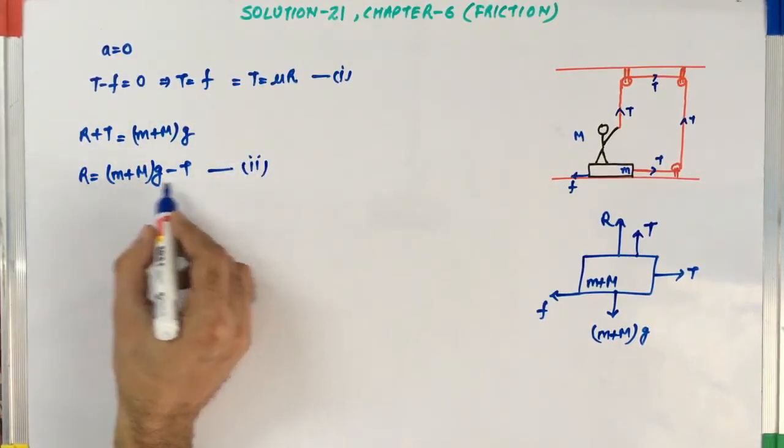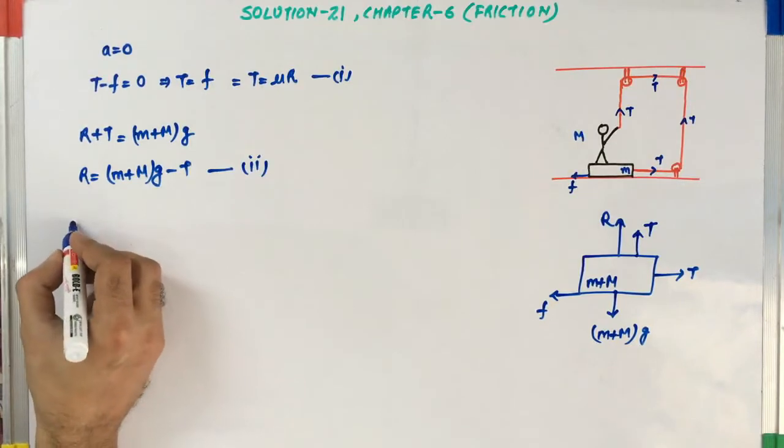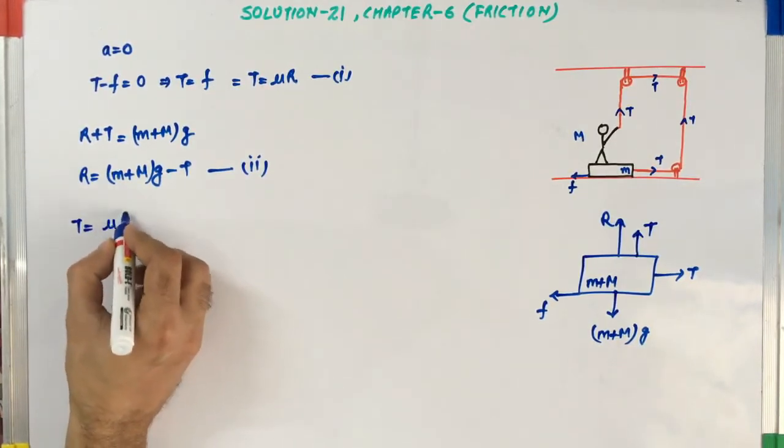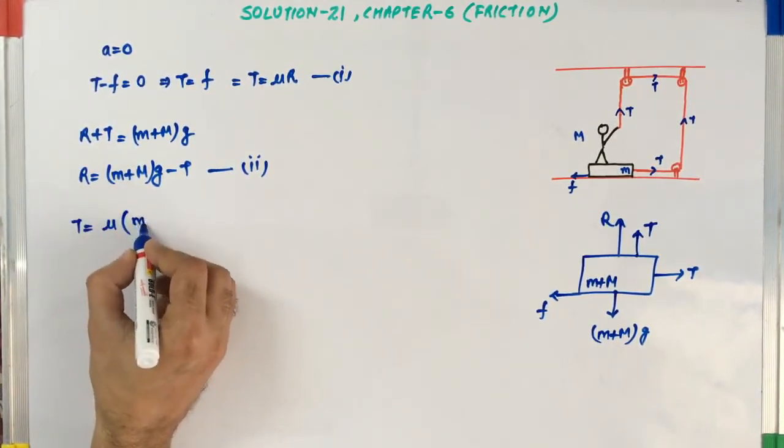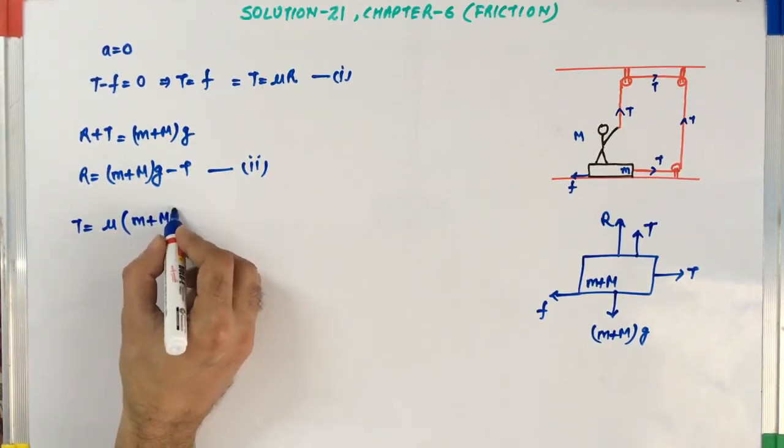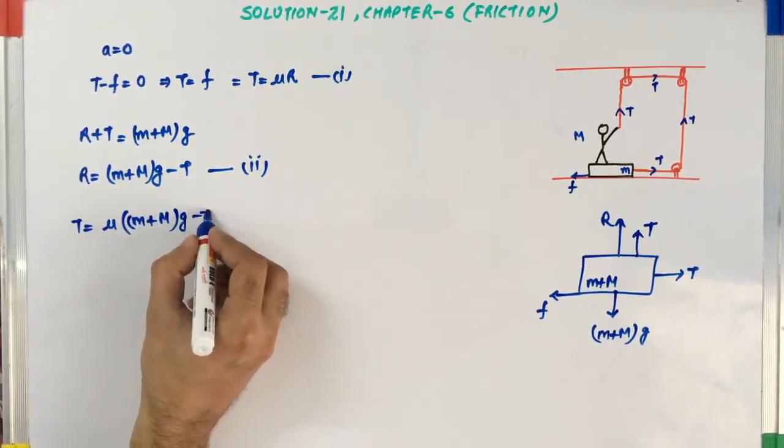Now putting the value of R from equation 2 into 1, we will get T is equal to mu times the value of R is M plus M into G minus T.